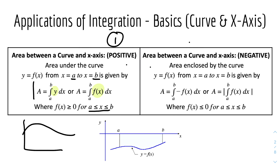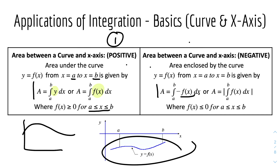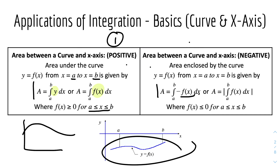Then we have the area between the curve and the x-axis when the curve is negative — in the negative region. The area enclosed by the curve y equals f of x from x equals a to x equals b is given by this equation: A equals minus the integral dx. It looks complicated because of the different signs, so you can just do it normally using the standard form, but you just need a modulus symbol. Because integrating a function when f of x is less than zero will give you a negative area. An area can't be negative, so just put a modulus sign around the integration to make it positive.